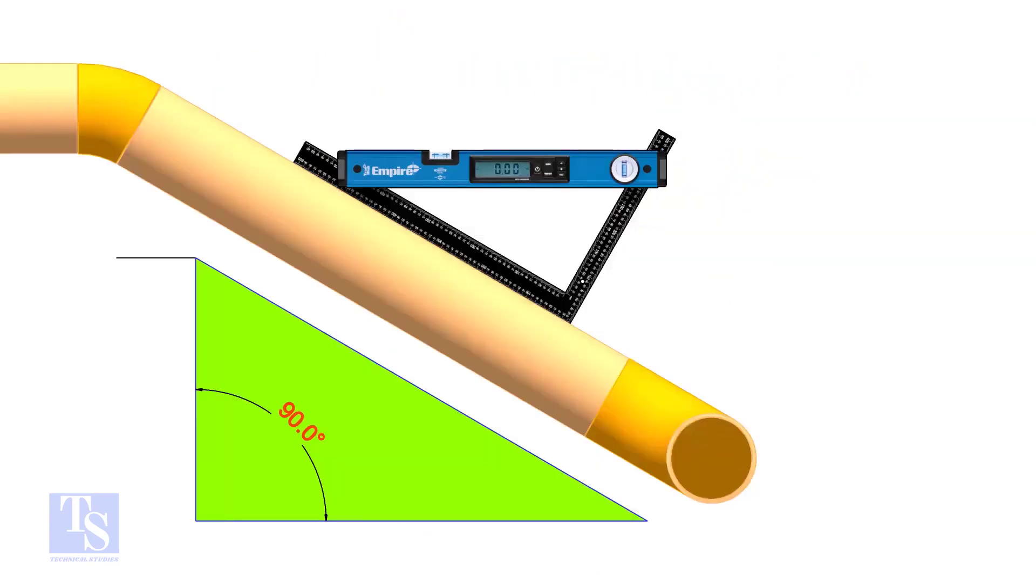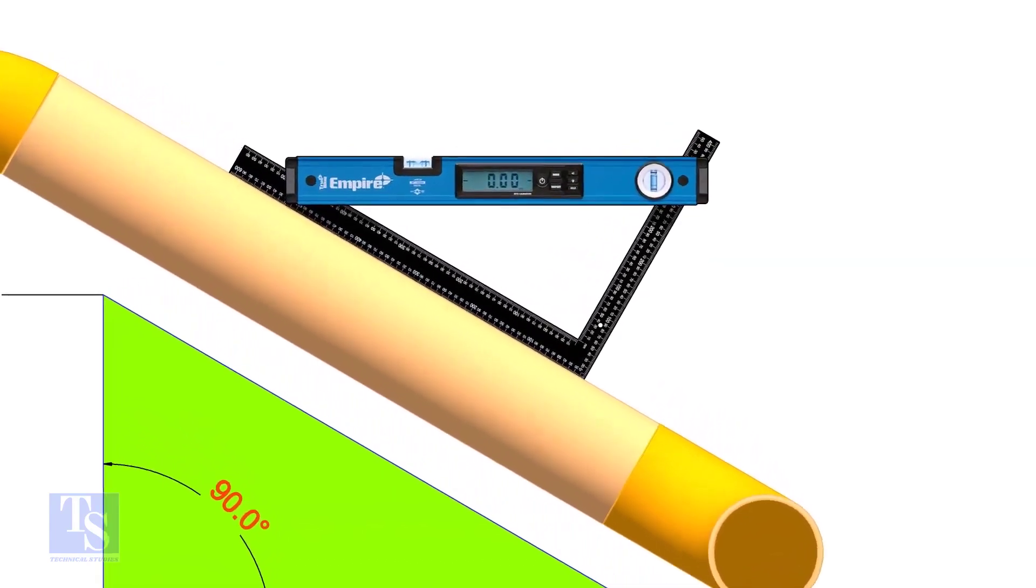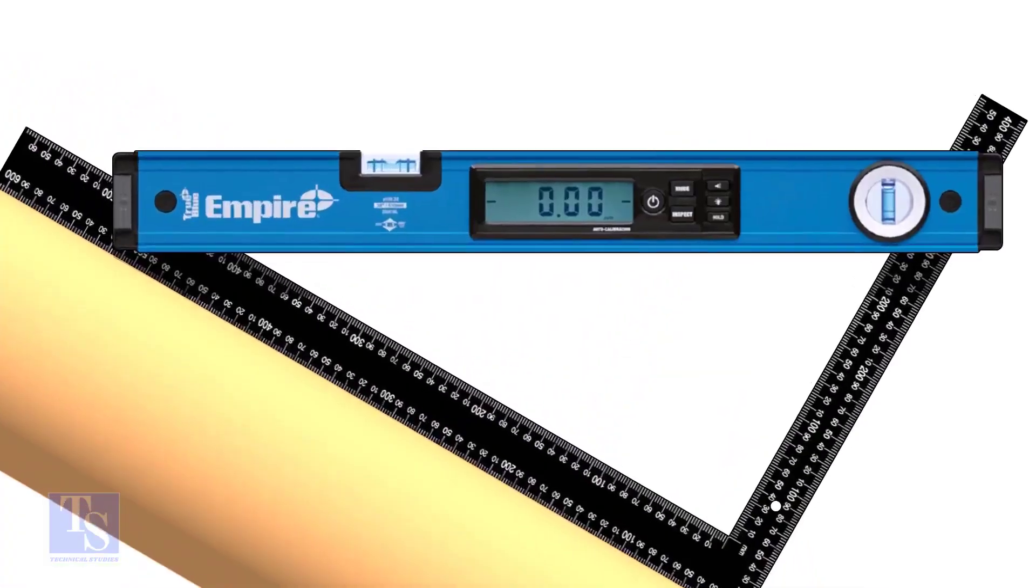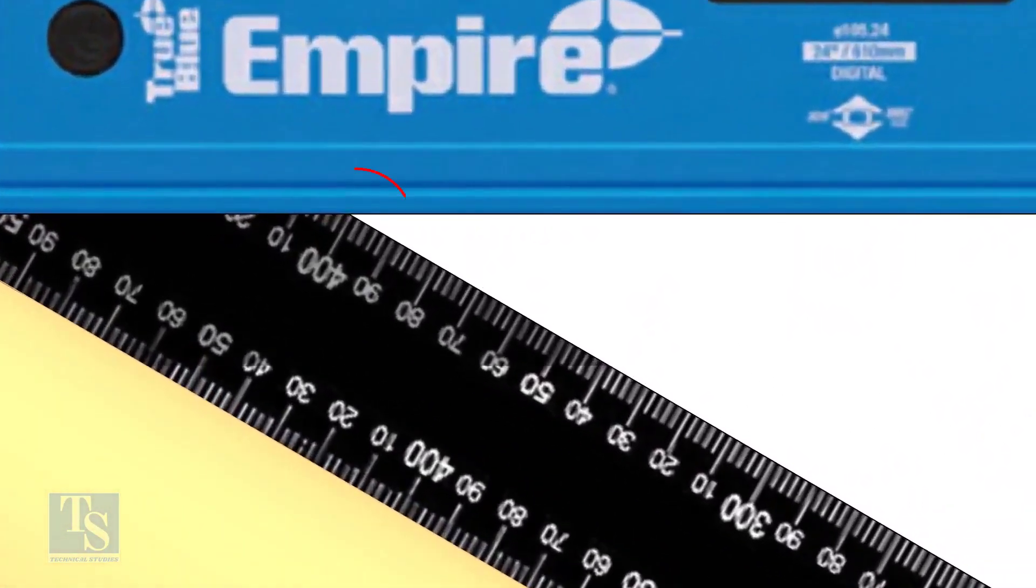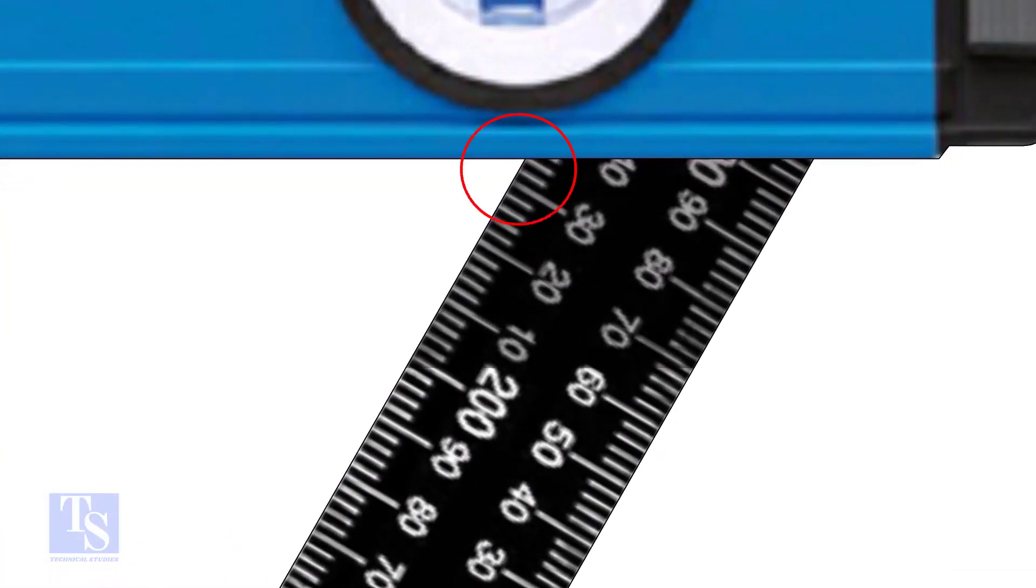Let us try another example. In this case, the run is 400mm and the set is 232mm.